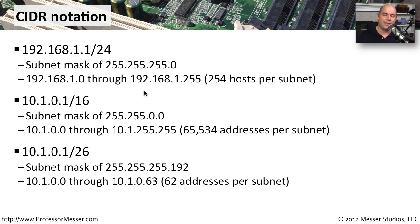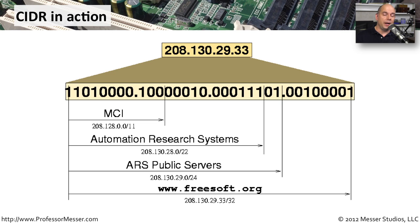There's a lot of math and calculation behind the scenes for these, but the key idea is that you now have flexibility in exactly how many networks you can configure and how many hosts per network. Here's a real-world example of classless inter-domain routing: the IP address 208.130.29.33 was given to what used to be freesoft.org, and it has a 32-bit subnet mask, meaning it's the end station.